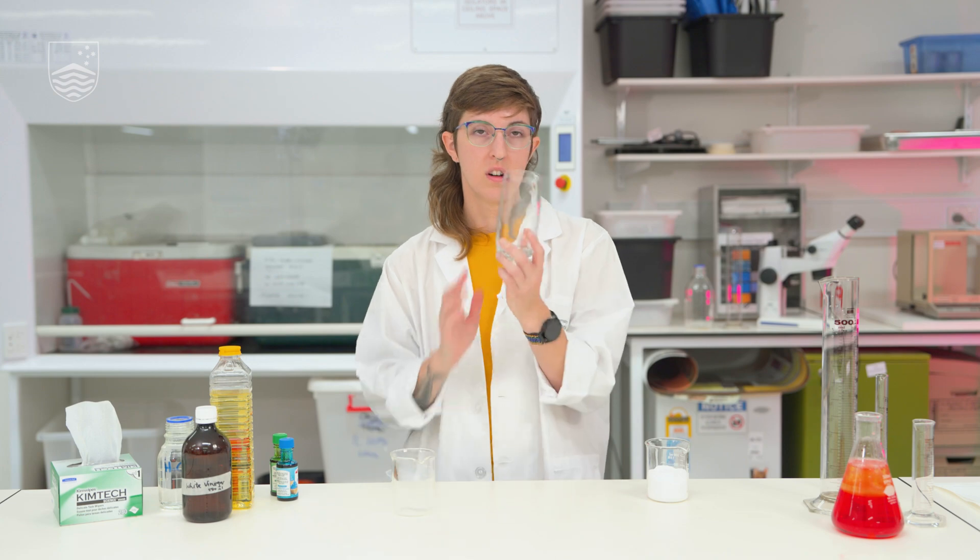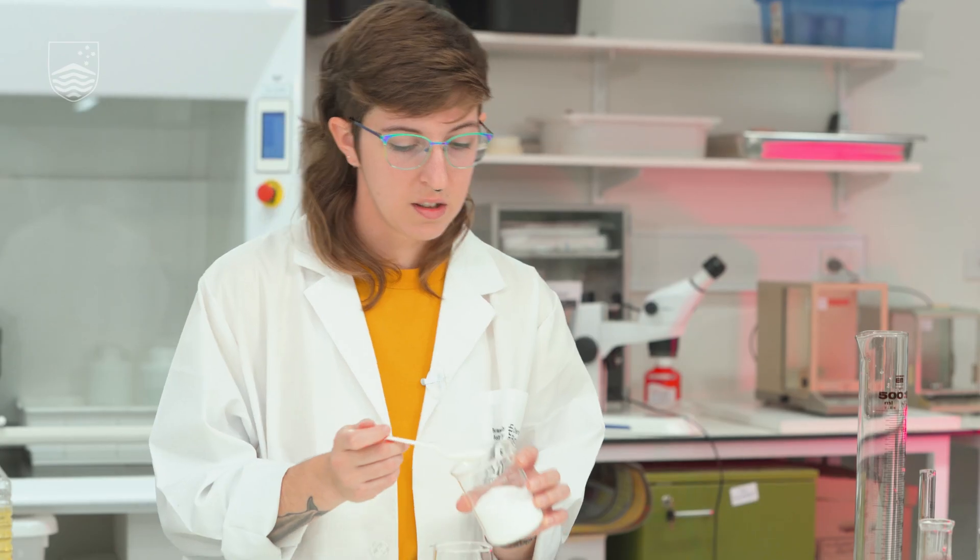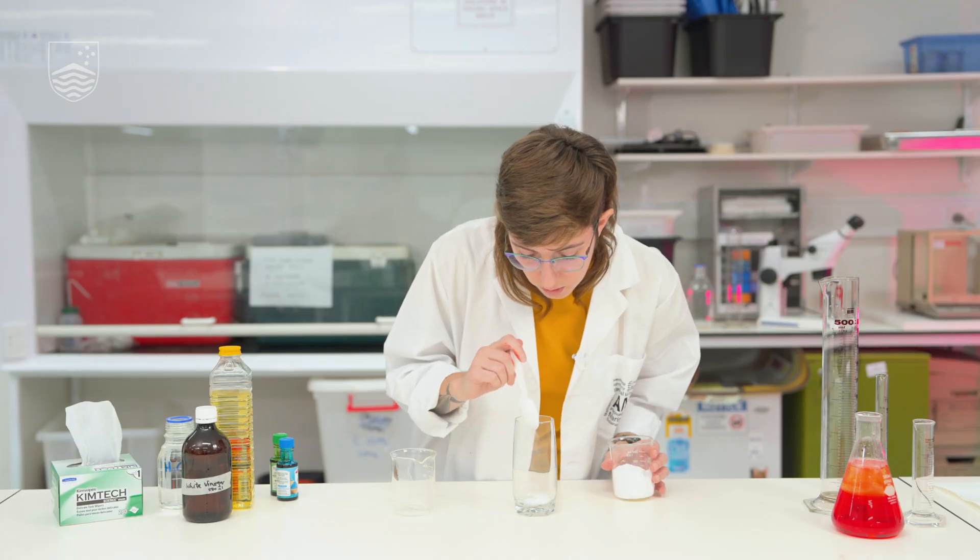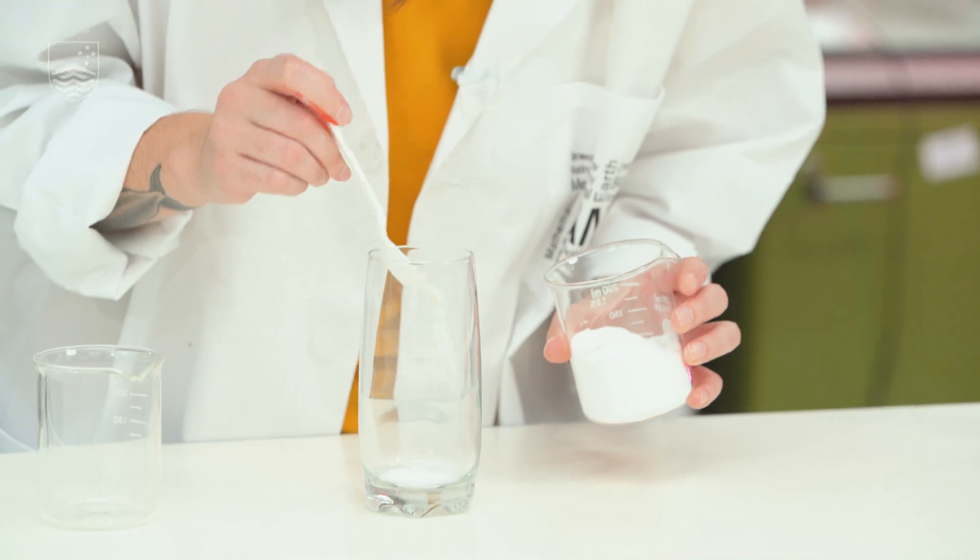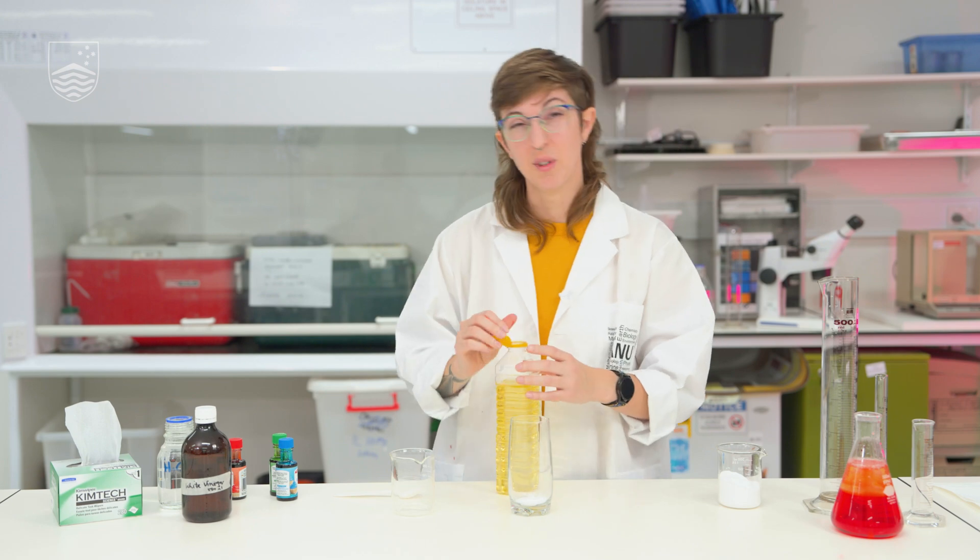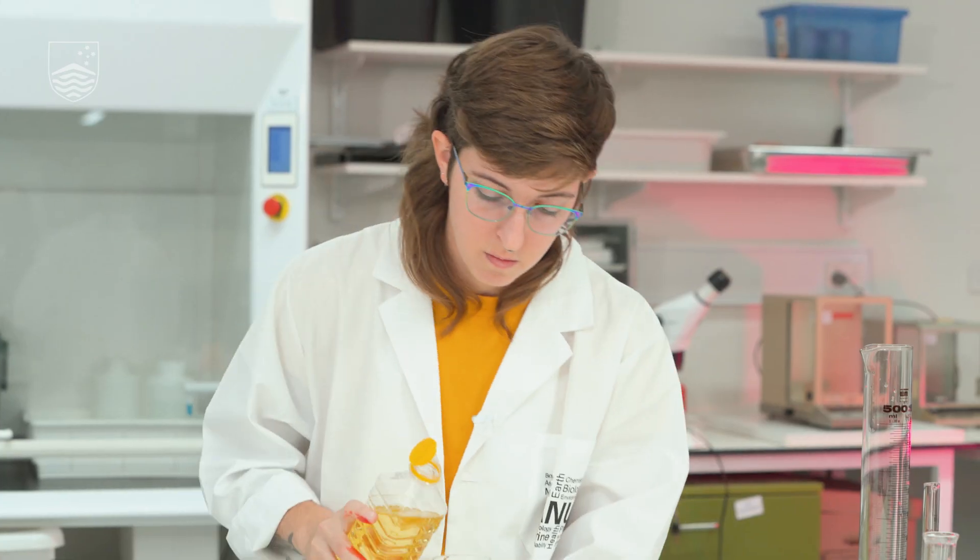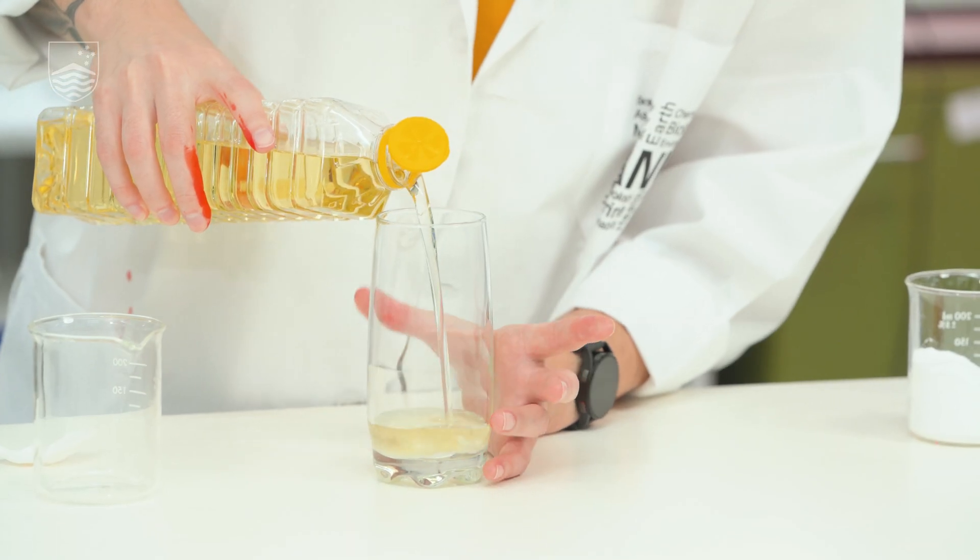What if we try mixing our ingredients in a different order and see if that gives us a different reaction? For this one, I'm going to start with a cup that we're going to add our baking soda to. About the same amount. A couple small spoonfuls just to cover the bottom. Then into this cup, we're going to add our cooking oil and fill it about halfway. So it's about the same amount of oil. Really gently because we don't want to mix up too much of the baking soda.